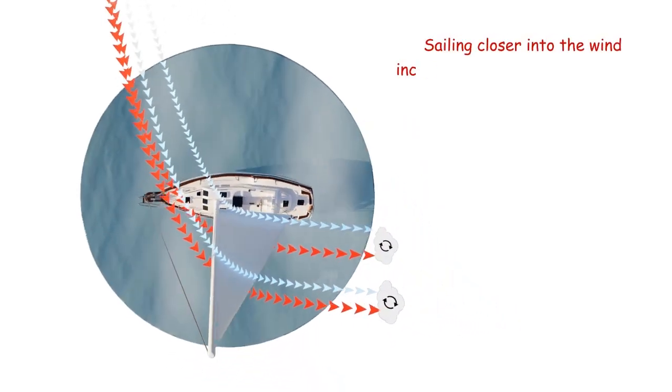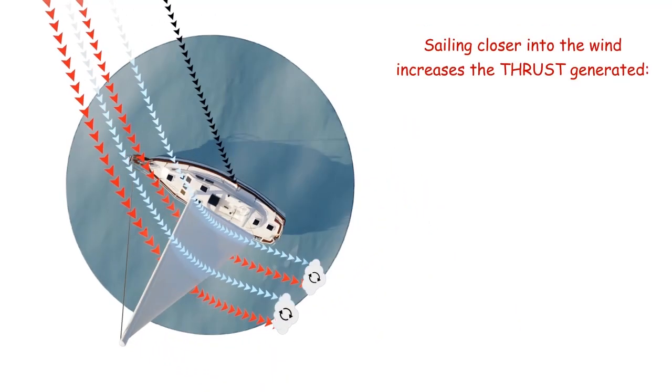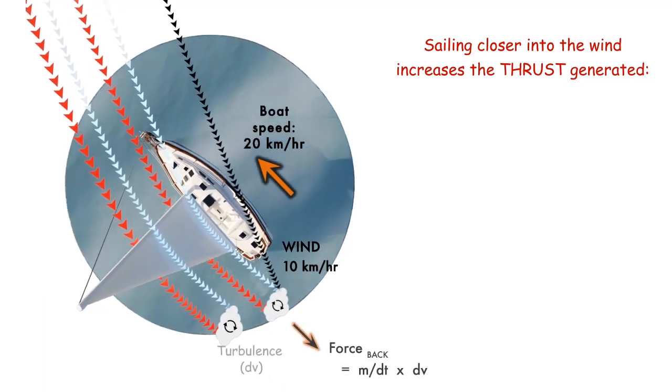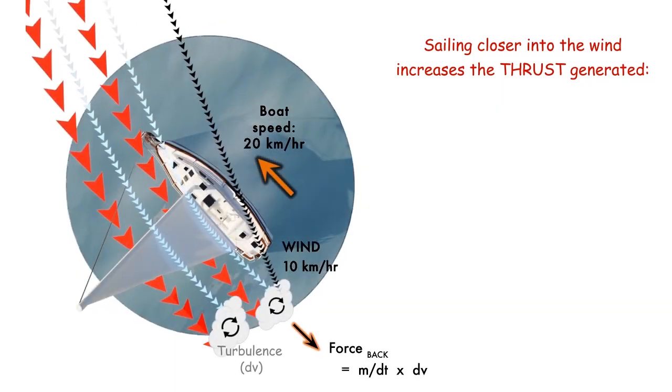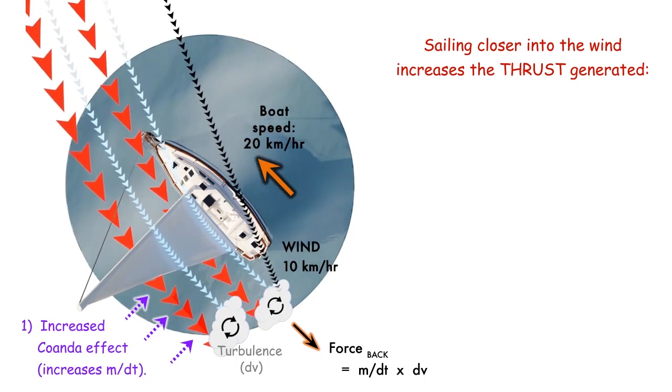Sailing closer into the wind increases the forward thrust generated for several reasons. A low angle of attack of the sail to the wind increases the Coanda effect on the leeward side of the sail, which then increases the airflow redirected backwards.